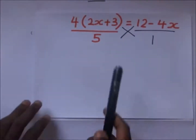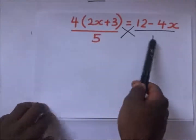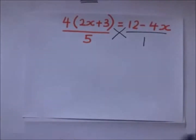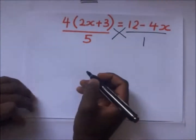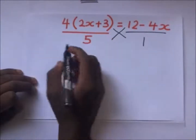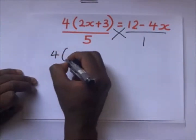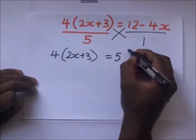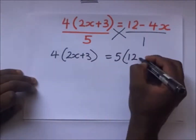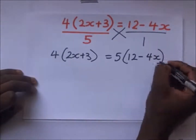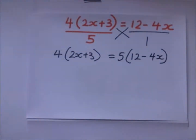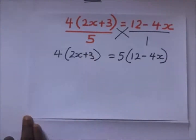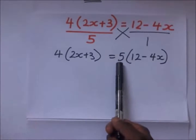By cross multiplication, we multiply this side by that and multiply 5 by the other side. It follows that 1 times 4(2x + 3) remains as 4 into (2x + 3), and this is going to be equal to 5 multiplied by (12 minus 4x). We realize we have factor 4 outside the brackets with an algebraic expression inside, and factor 5 outside the bracket with an algebraic expression inside.